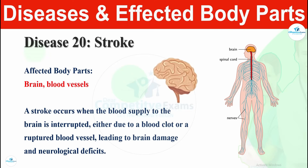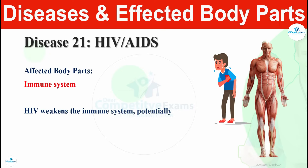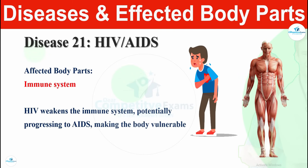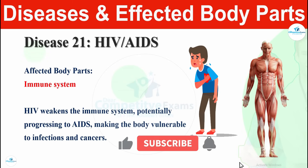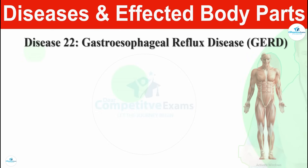Disease number twenty-one is HIV and AIDS. HIV and AIDS affect the immune system. HIV weakens the immune system, potentially progressing to AIDS and making the body vulnerable to infections and cancers. HIV and AIDS make the body's immune system very weak, unable to fight even simple common diseases.